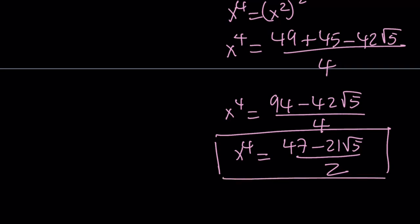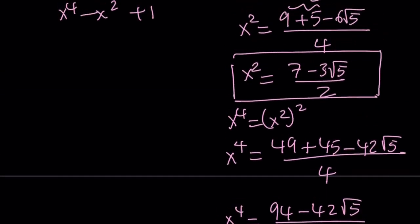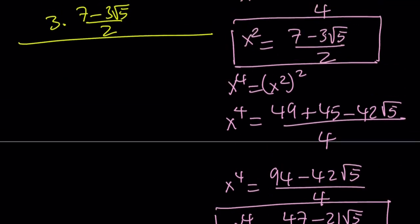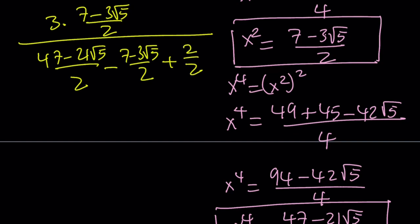Now I'm ready to plug those into my expression. I'm going to replace x squared with 7 minus 3 root 5 over 2, and at the bottom I have x to the fourth, which is 47 minus 21 root 5 over 2, minus x squared, which is 7 minus 3 root 5 over 2, and then plus 1, which I can write as 2 over 2, so we have a common denominator. We can totally forget about the denominators because both top and bottom have the same denominators. We can flip and multiply and cancel out the 2s.